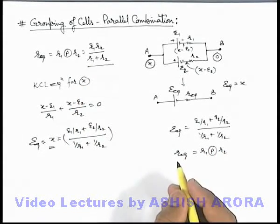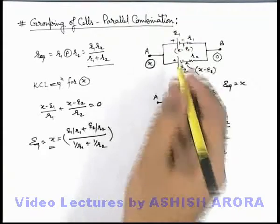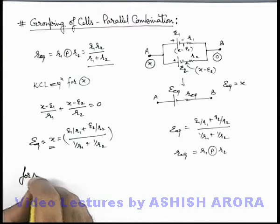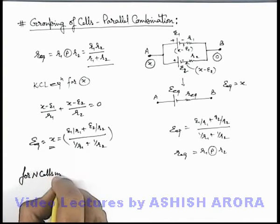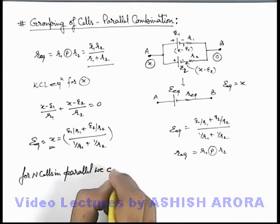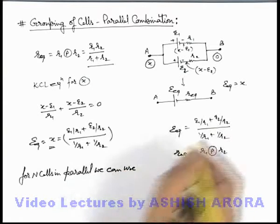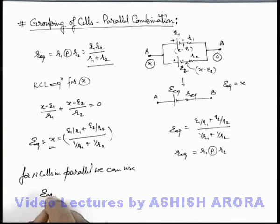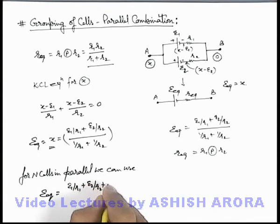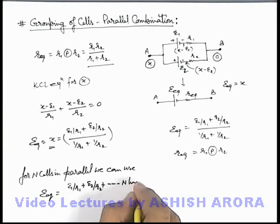And the same can be generalized for n cells connected in parallel combination. Here we can say for n cells in parallel, we can directly use, we just generalize the relation as e_equivalent. In this situation it'll be e1/r1 + e2/r2 plus and so on up to n times.